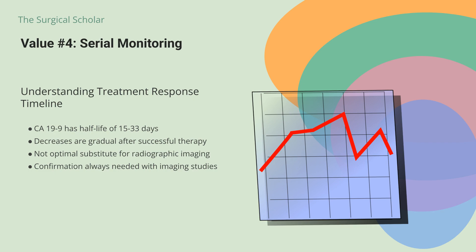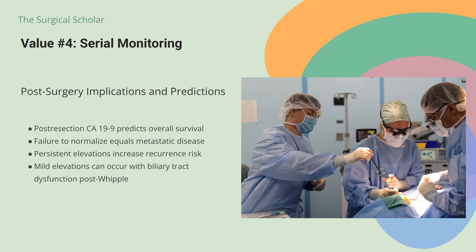You won't see immediate drops after successful treatment. Confirmation of disease progression should always be pursued with imaging studies or biopsy — CA-19-9 alone is not an optimal substitute for radiographic imaging to assess treatment response. Post-resection CA-19-9 predicts overall survival in patients treated with adjuvant chemoradiation. Failure of normalization of CA-19-9 following resection is tantamount to metastatic disease. An important caveat: mild elevations can occur with biliary tract dysfunction, which often happens after a pancreaticoduodenectomy.